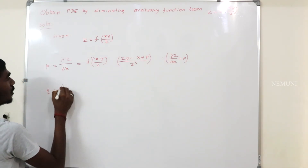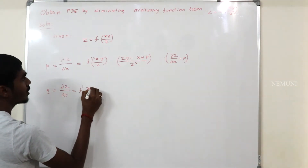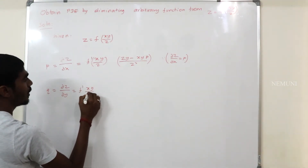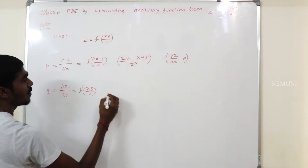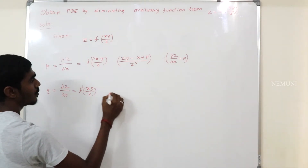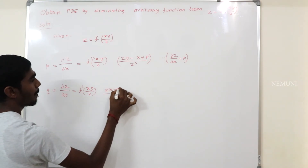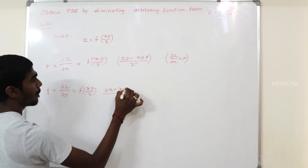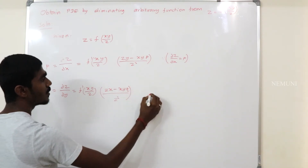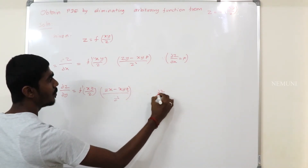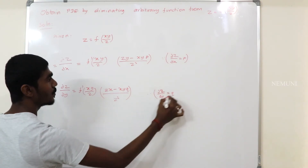Similarly, q equal to dou z by dou y, which is equal to f dash of x·y by z. Partially differentiating the interior, q comes from dou z by dou y, which is equal to q.